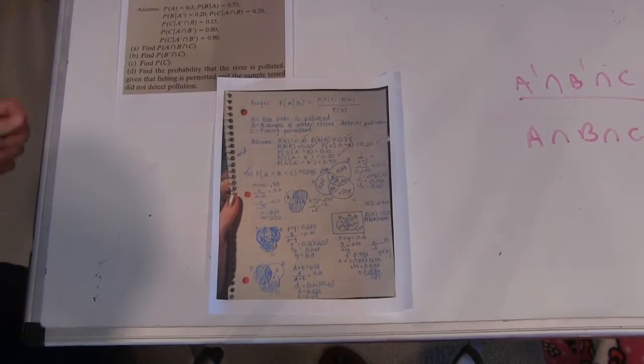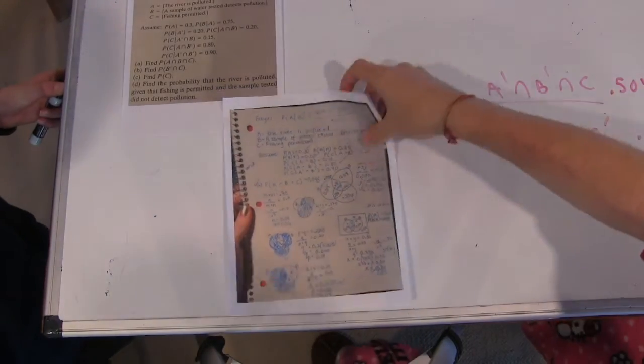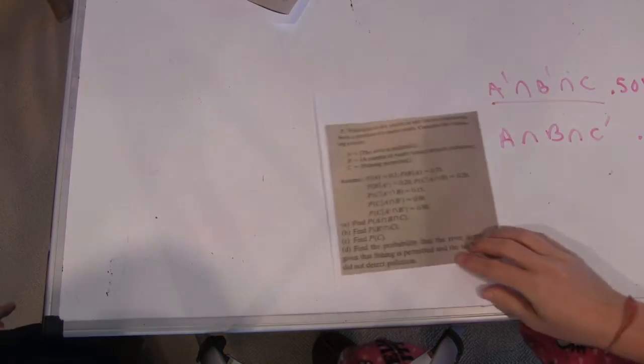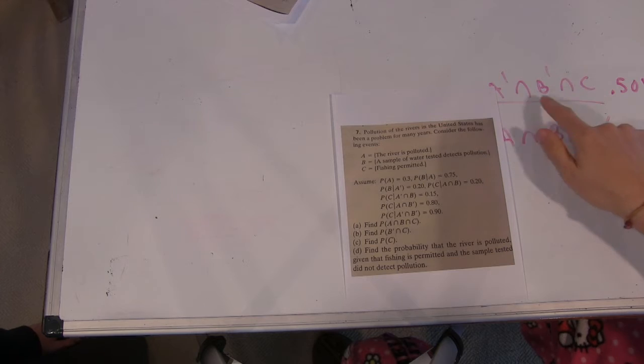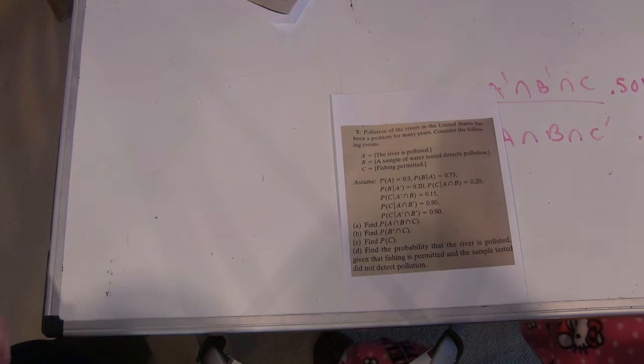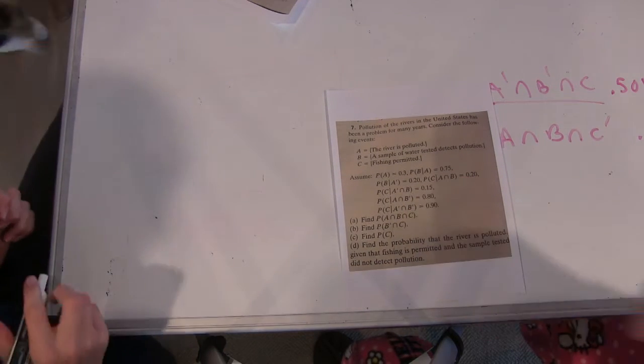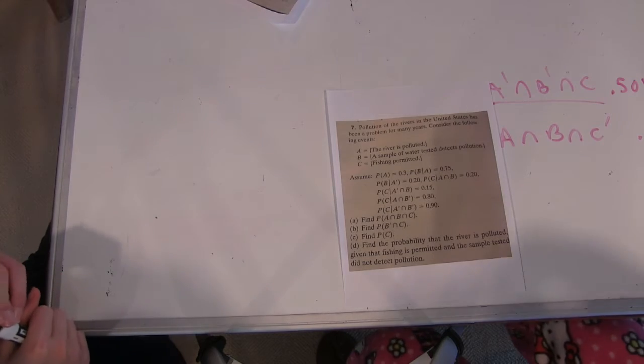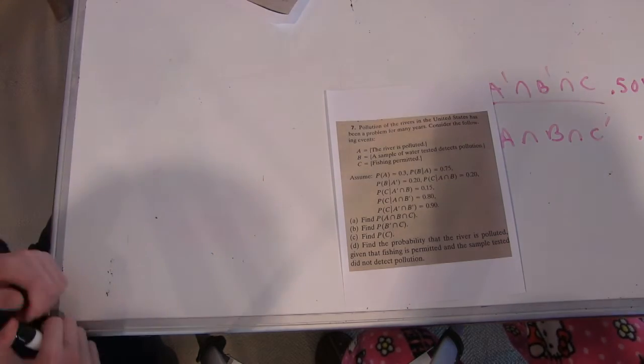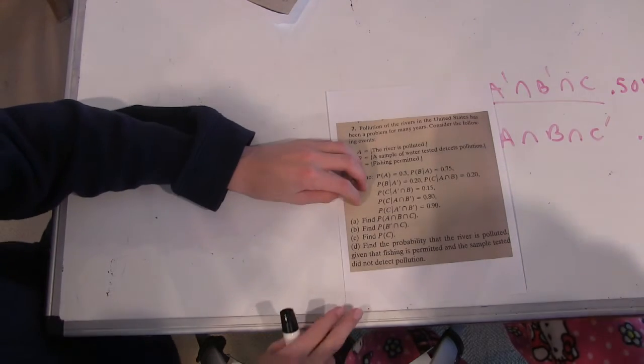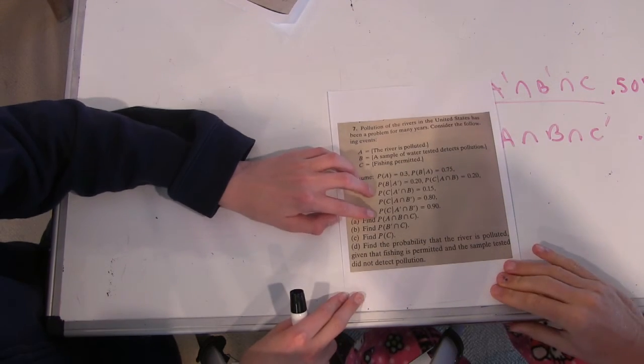So in order to do that, let me zoom out a little bit, and maybe I'll put the sheet over here. So the first one we're going to do was A prime intersect B prime intersect C.